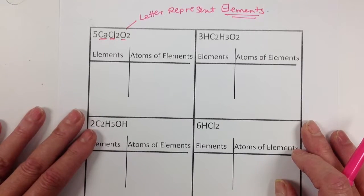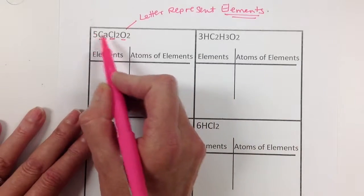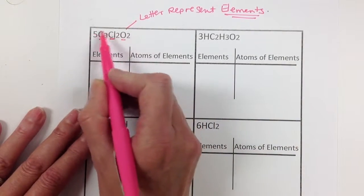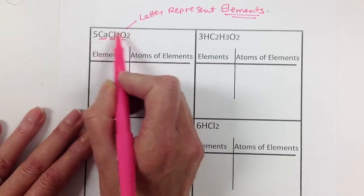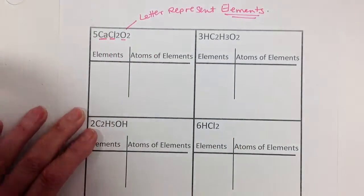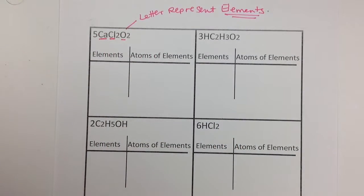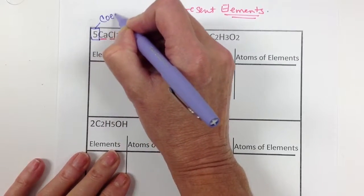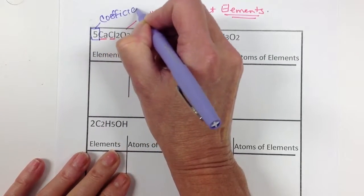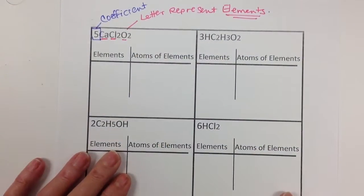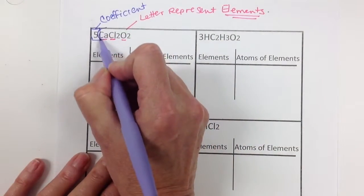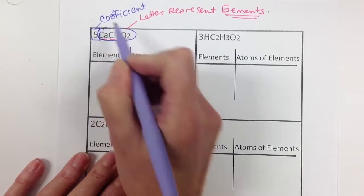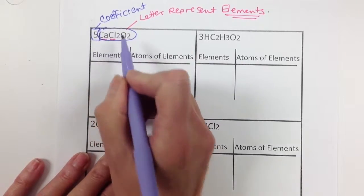The atoms of each of those elements are represented by whatever number, or if you only have one, then you only have one. But whatever coefficient or subscripts that are shown, that tells us how many of each element are present. Let's look at this big number. For starters, this is our coefficient. The coefficient is going to tell me how many molecules or how many of this stuff I've got. It says I've got five of all of that.